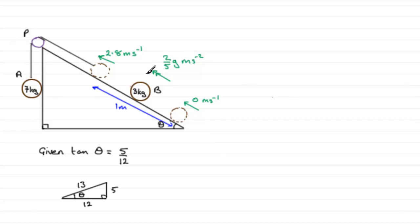Now, for this last part of the question, we're told that when B has moved the distance of one meter up the plane, the string breaks. And given that in the subsequent motion B does not reach P, we've got to find the time that elapses between the instance when the string breaks and when B comes to instantaneous rest.